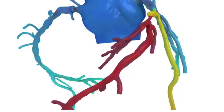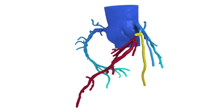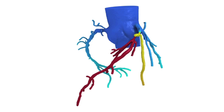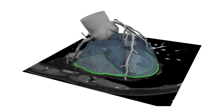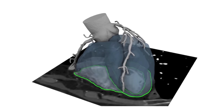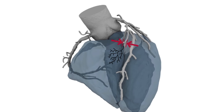The HeartFlow non-invasive FFRCT analysis uses standard CT data sets to create a three-dimensional model of an individual patient's coronary anatomy. From that 3D model, powerful supercomputers are able to simulate blood flow to assess whether a particular blockage is restricting blood flow to the heart muscle.